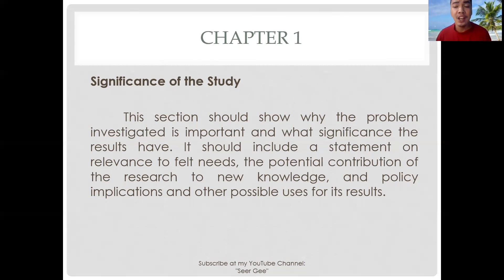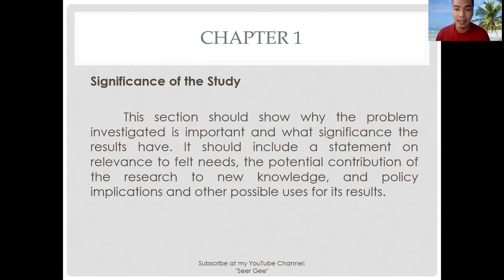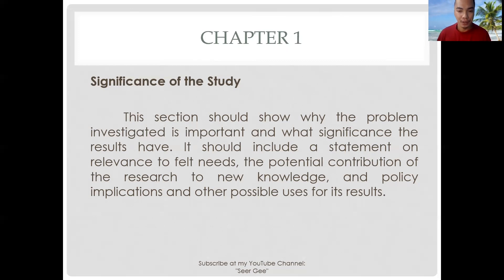You can do it in a bullet format depending on the format prescribed by your research instructor. In this section, you really need to identify who would benefit from your study and what benefit they could get from it. Note that the order of listing beneficiaries is not arranged alphabetically — you should list first the stakeholder who could benefit most from your study.